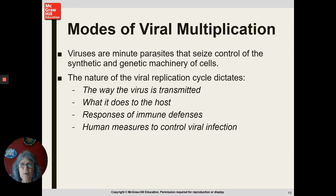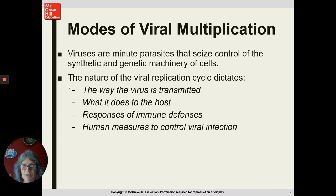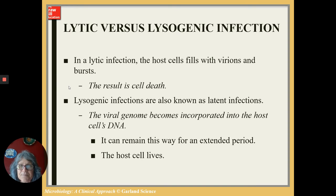How do viruses go about multiplying if they aren't able to reproduce? They take over our machinery in the host cell. How they take over — their life cycle, how fast they replicate, what they do — has a lot to do with how they're transmitted, what the effects are to the host, what our immune response is, and what we'll do to control the spread of that infection.